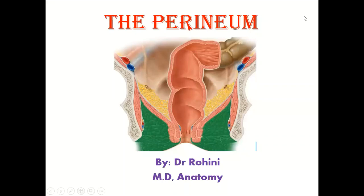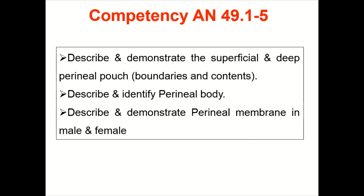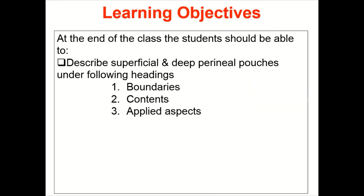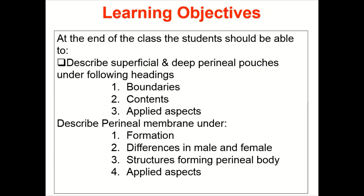Good morning everyone. Today we are going to discuss the perineum, especially the urogenital triangle. The competencies are to describe and demonstrate the superficial and deep perineal pouches with their boundaries and contents, to describe and identify the perineal body, and to demonstrate the perineal membrane in male and female. By the end of class you should be able to describe these structures including their boundaries, contents, applied aspects, and the differences in male and female.